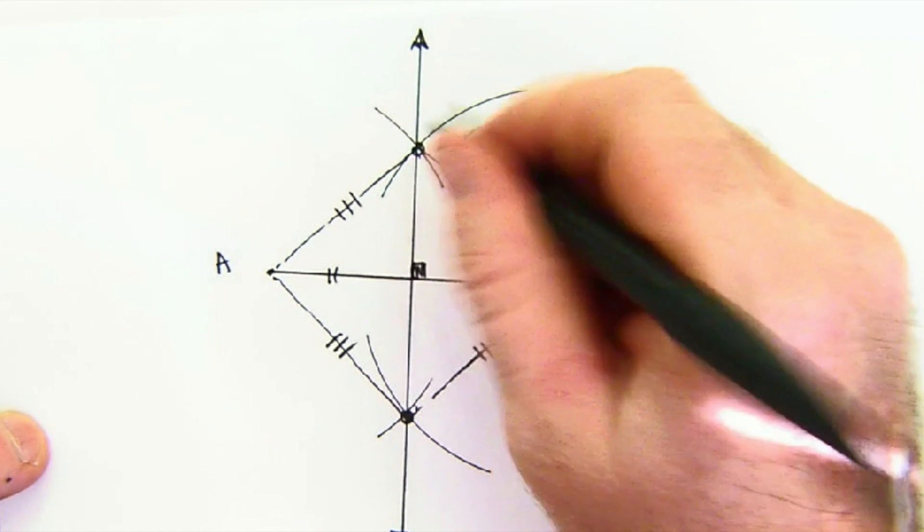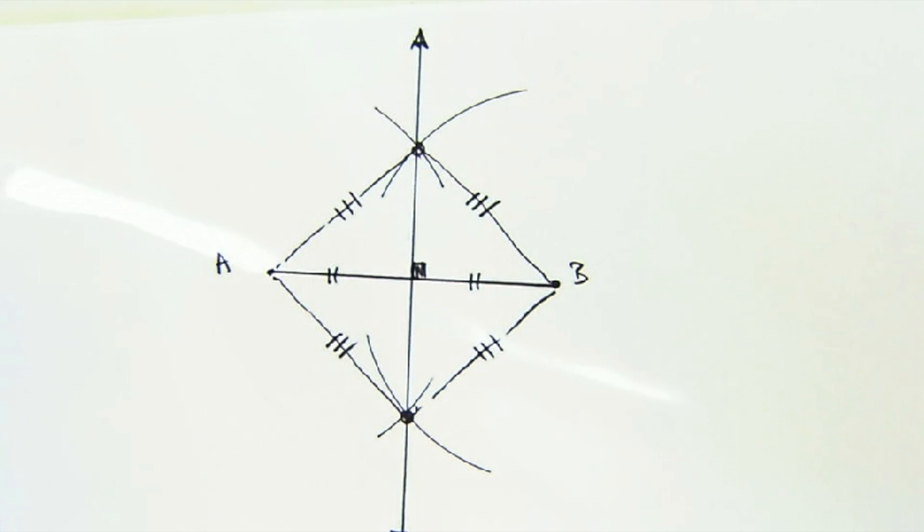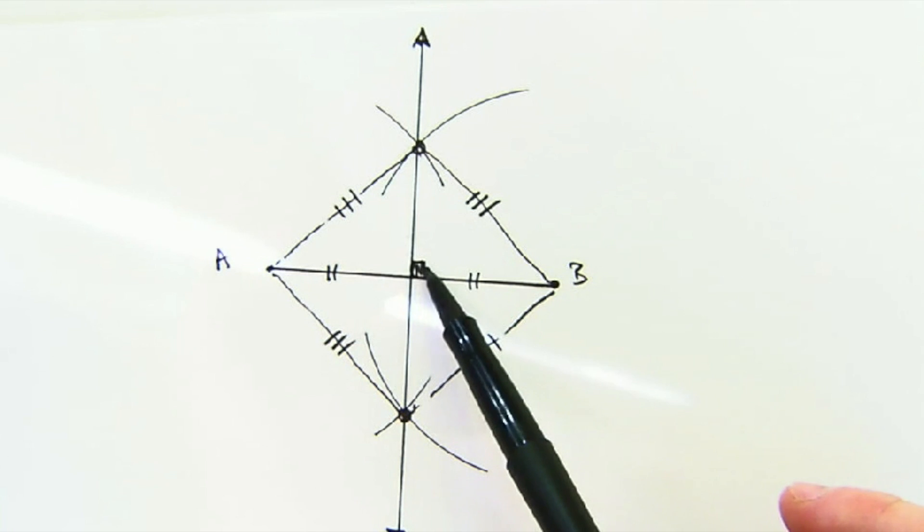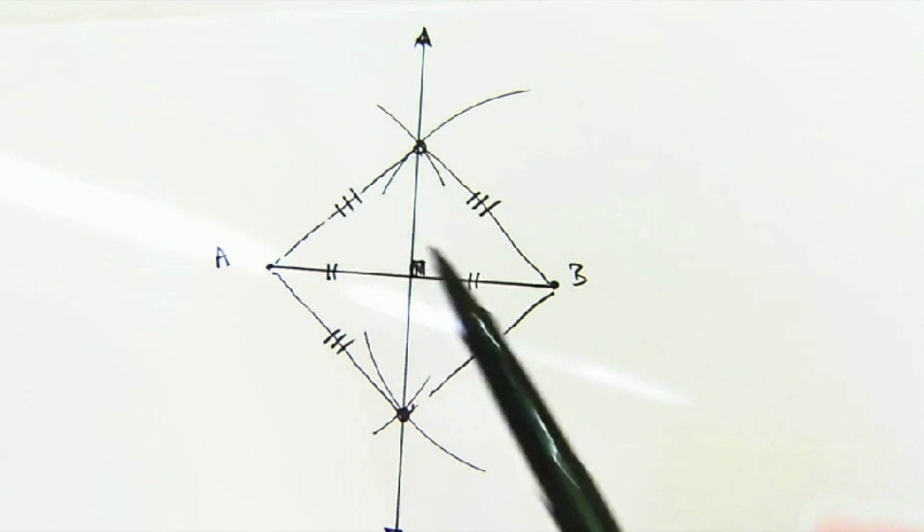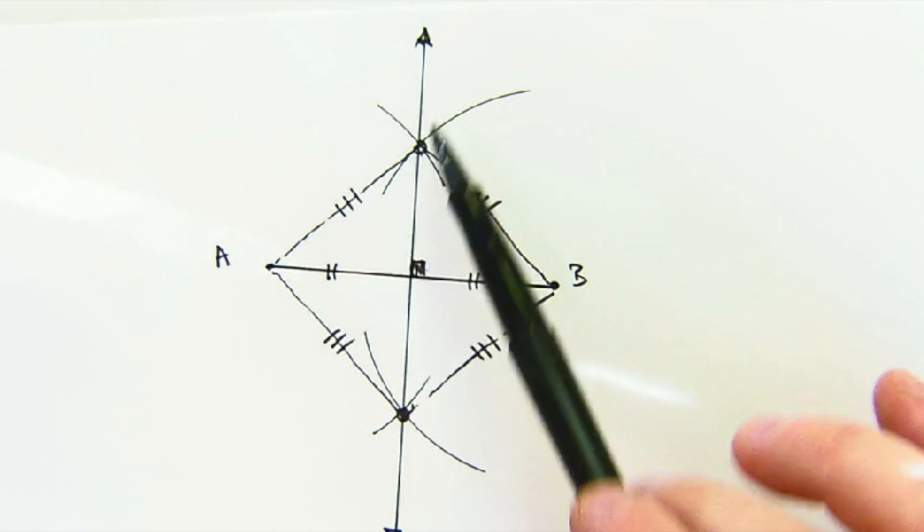And what that actually forms behind the scenes is a rhombus. And a rhombus has the property that the diagonals are perpendicular and they bisect each other. So by creating a rhombus, we actually perform that construction. Kind of a cool thing hiding behind the scenes there.